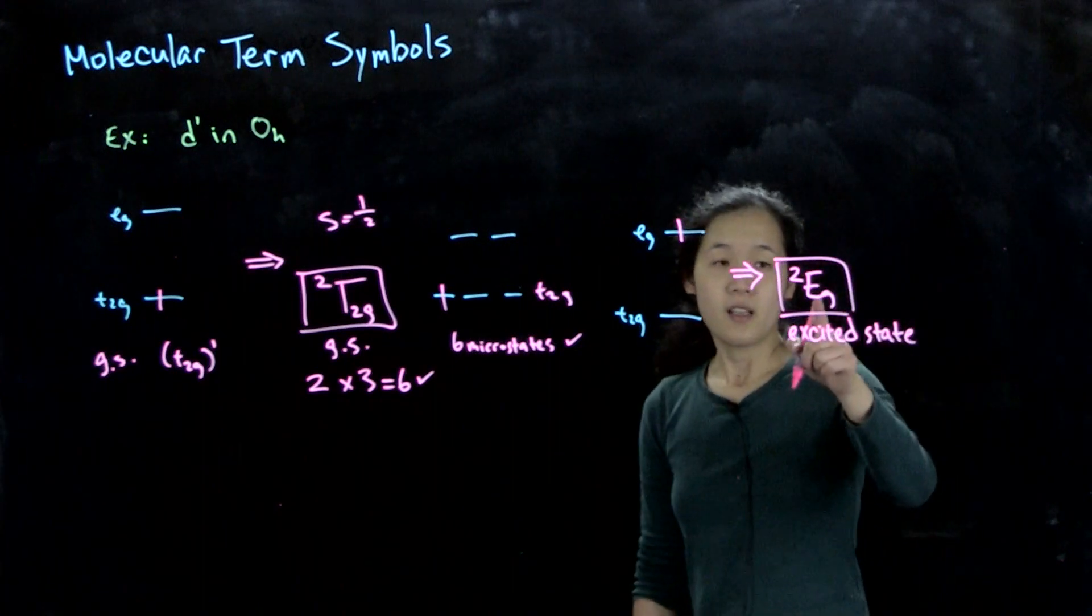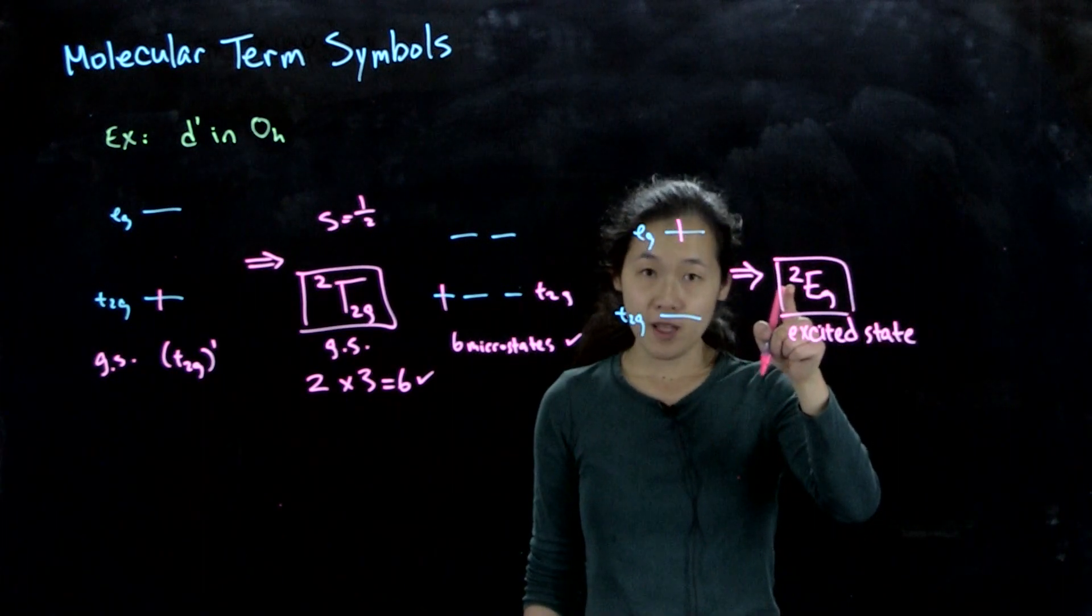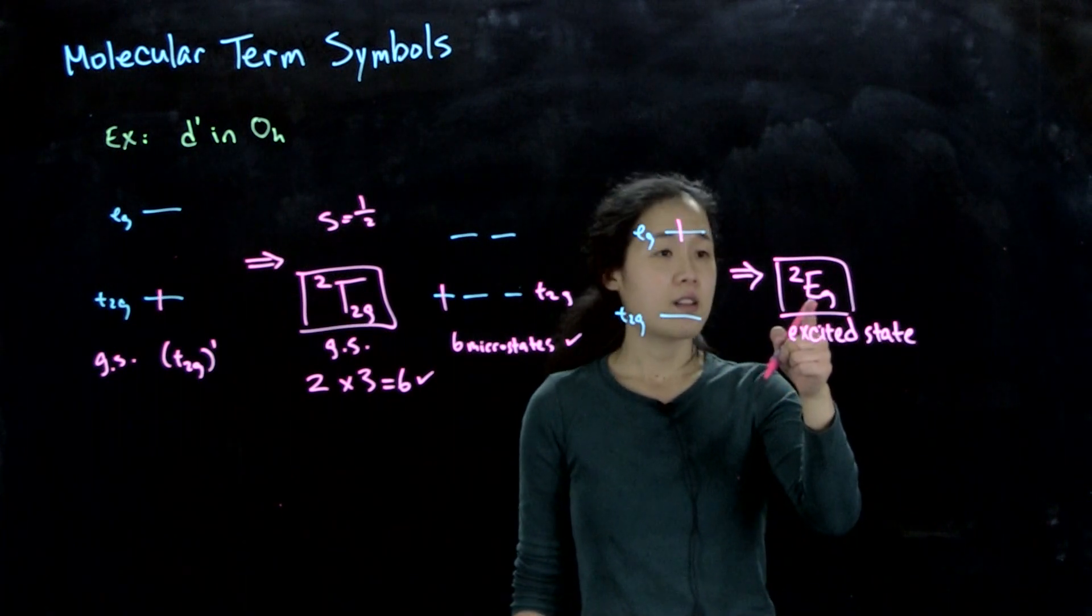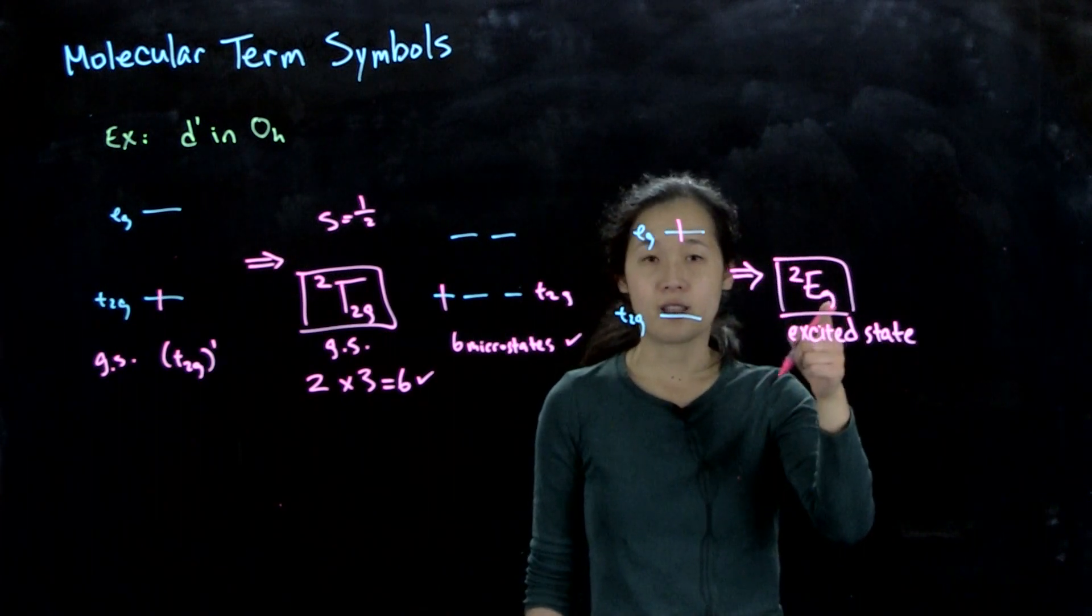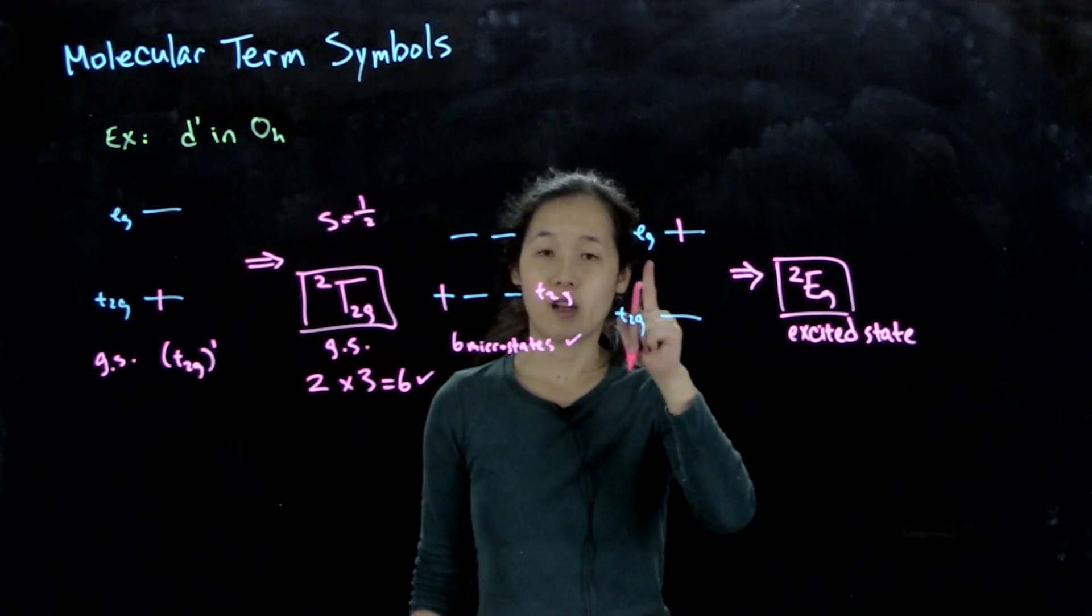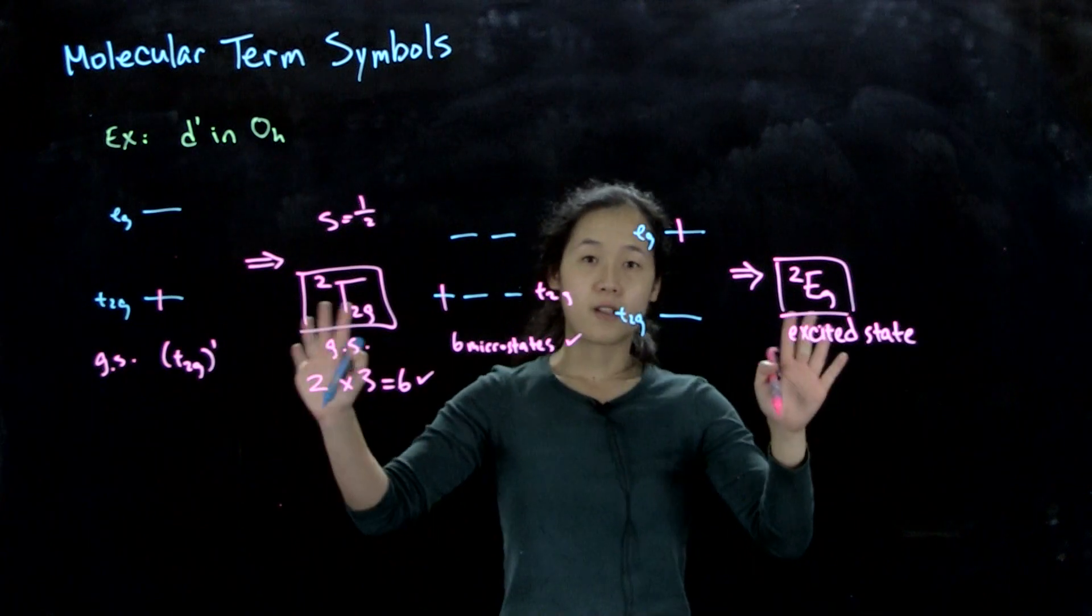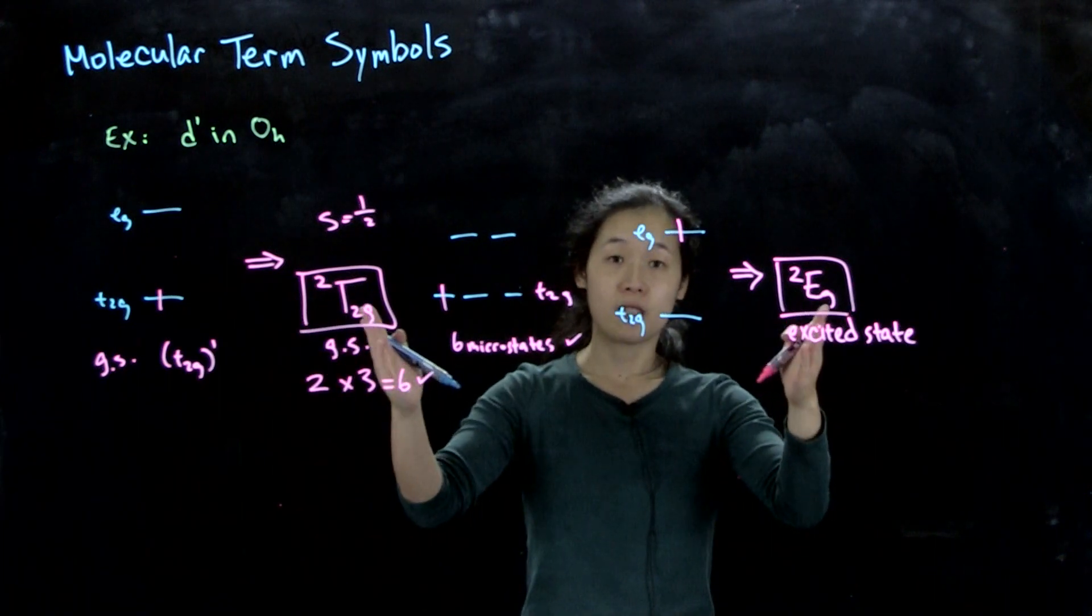And again, it's 2-fold degenerate by spin. The orbital multiplicity is 2 because it's an e state. So therefore, there should be 4 microstates, which is indeed the number of ways you can occupy one electron in the eg orbitals. So ground state, excited state for a d¹ configuration, easy peasy, we have 2 states.